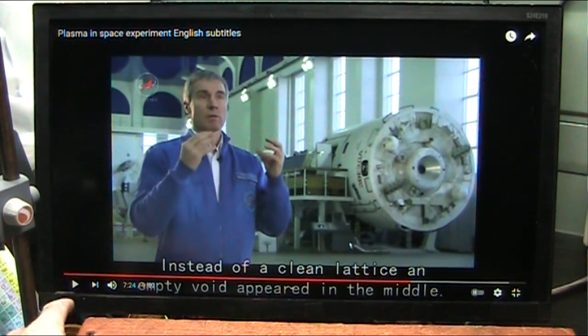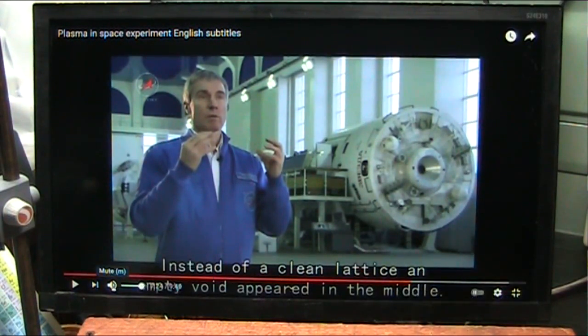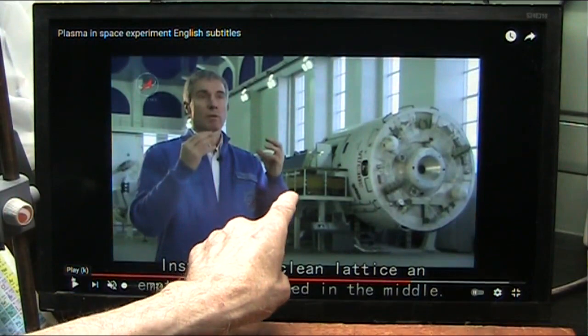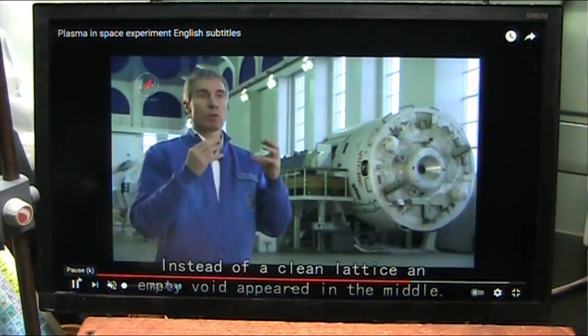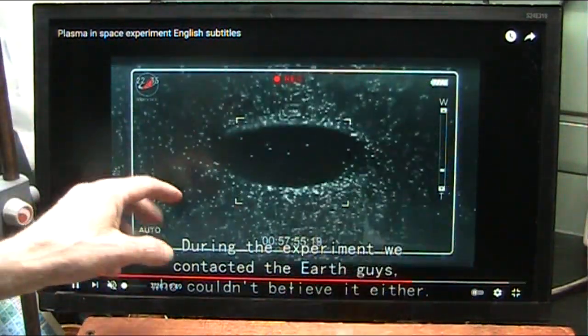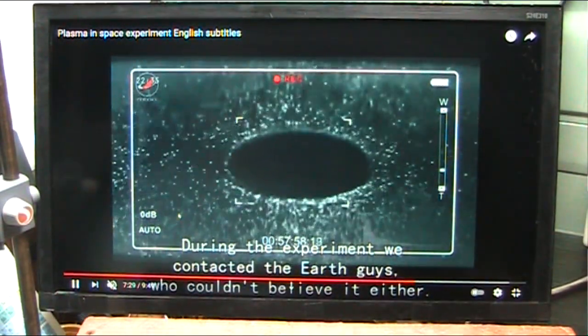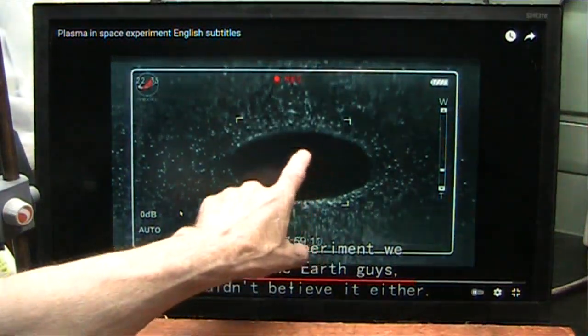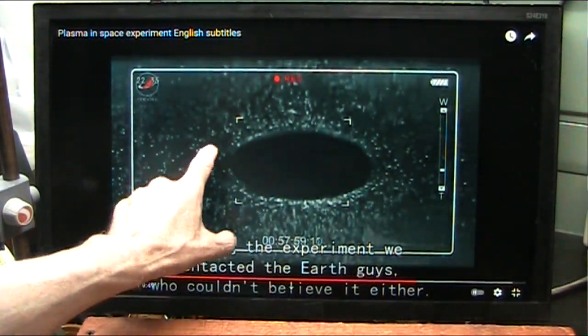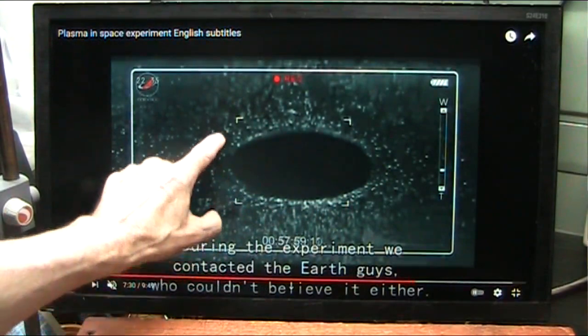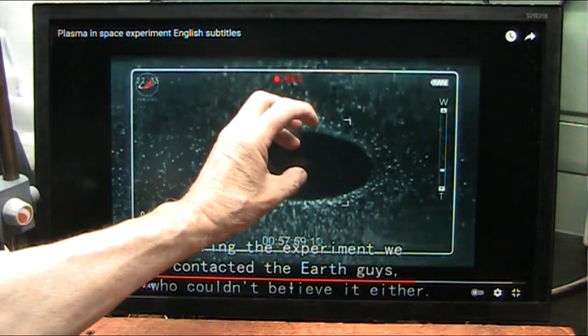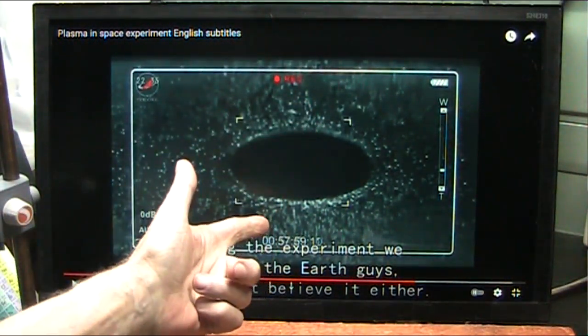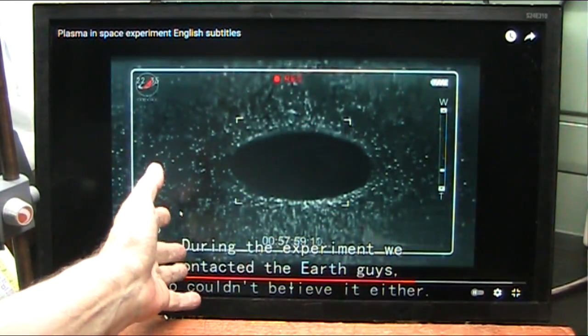And they didn't expect this, and the Max Planck guy freaked out when he saw it. Let me make sure I got the sound off because I think it's in Russian. All right, here we go. They started to let those particles in, and here's what happened. Instead of an open lattice, they expected them all to collect, and there it is. There's your black hole right there. It's a black hole.